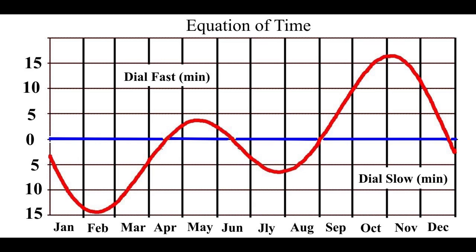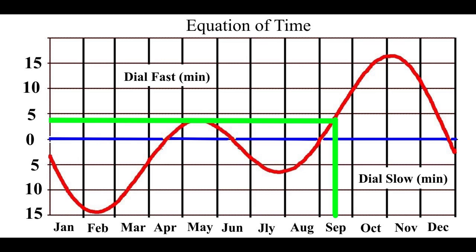First, we will find our date — September 13th — then move vertically to intersect the curve. Moving across to the time correction scale, we see that the equation of time tells us that sundials are running 4 minutes fast on this date.